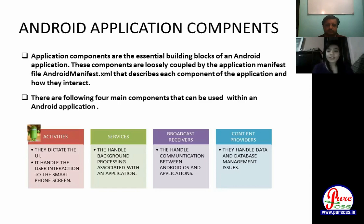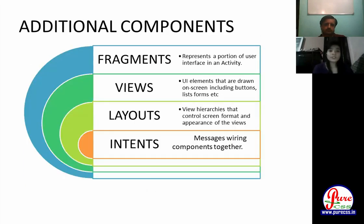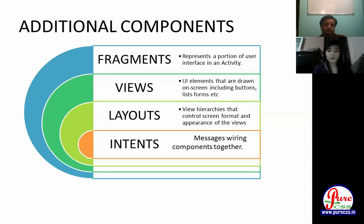These components handle interaction between the user, the operating system, and the application. You can see UI elements drawn on screen including buttons, lists, forms, etc. You can create layouts and add various types of elements to your application. In Android Studio, there is a palette where you can add buttons, text views, or whatever you need. Intents wire components together.